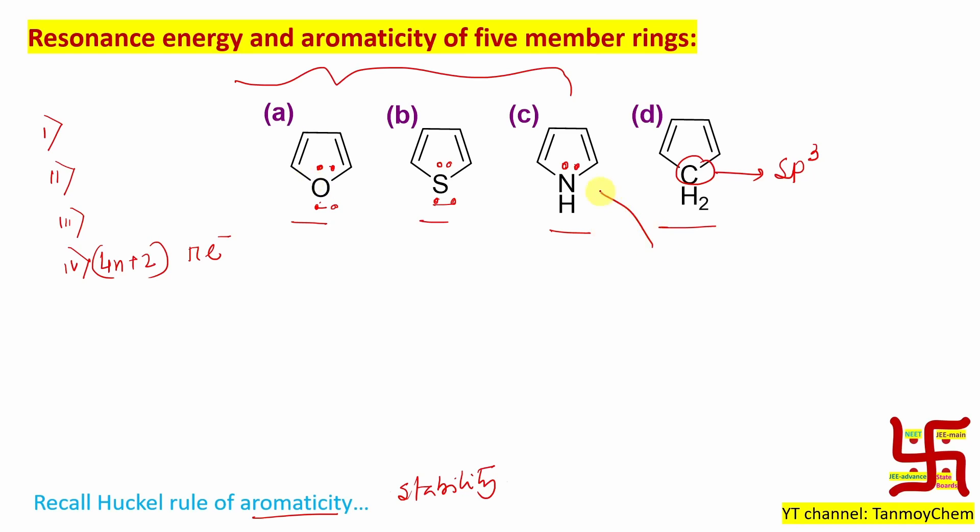You may have doubt, sir, is this nitrogen's hybridization sp3 or sp2? It is, student, sp2. Because if it is sp2, it has a p orbital.